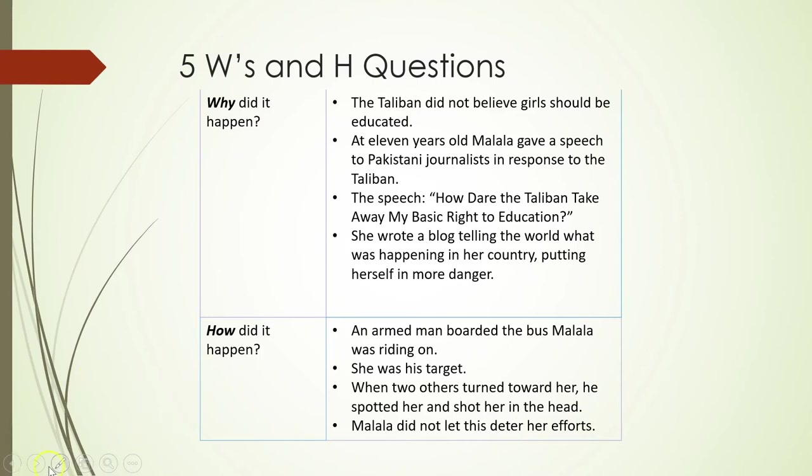How did it happen? Basically, an armed man boarded the bus that Malala was riding on. When two others turned toward her, he spotted her and shot her. However, just because all this happened, it certainly did not deter her efforts.